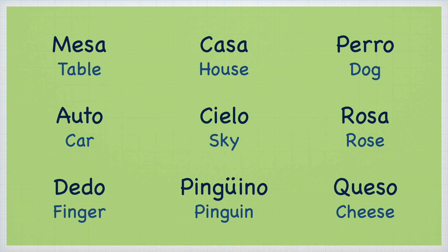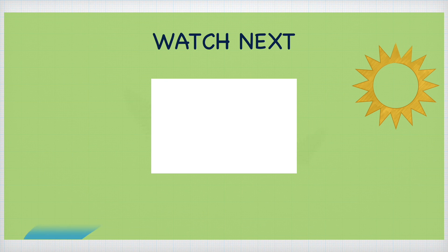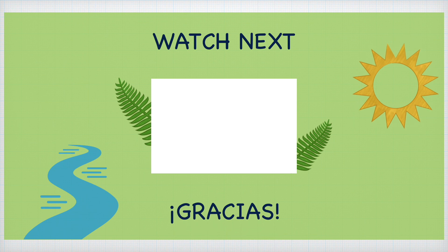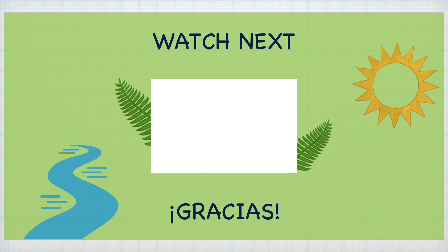Queso. So here the Q makes the K sound and the U doesn't sound in this instance. There's an exception when we combine Q and U — it sounds like K, and the next vowel is E. Queso. For these and more exceptions, I have a series of 30 days to practice the pronunciation of all the letters as well as those key elements that make all of these exceptions. I'm going to leave the link here to the playlist. Go watch it. I'm sure you'll learn a lot.